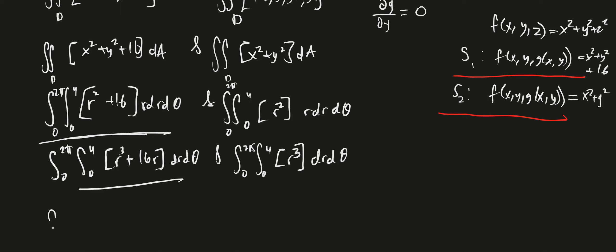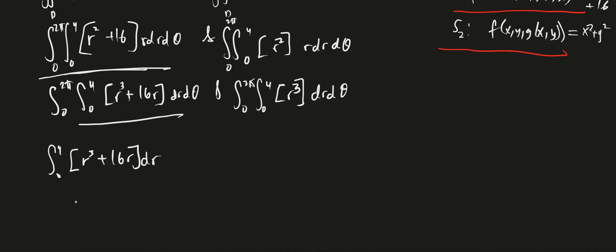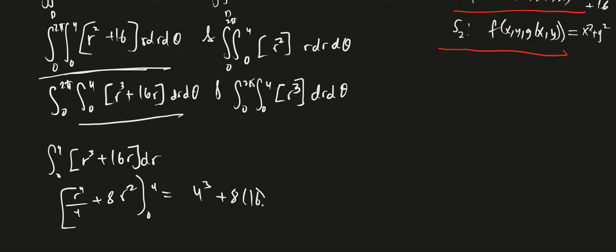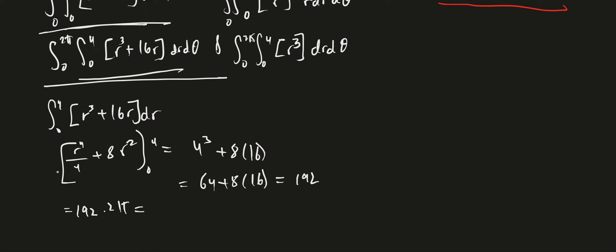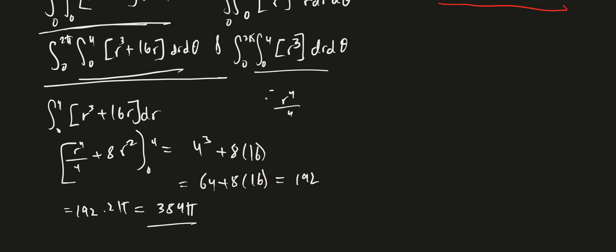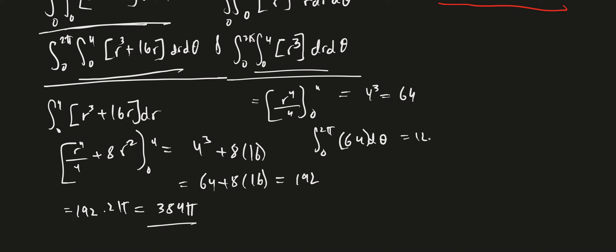For S1: the inner integral from 0 to 4 of (r³+16r) dr = r⁴/4 + 8r² evaluated at 4 = 64 + 128 = 192. Integrating over θ from 0 to 2π gives 192 times 2π = 384π. For S2: the inner integral from 0 to 4 of r³ dr = r⁴/4 evaluated at 4 = 64. Integrating over θ from 0 to 2π gives 64 times 2π = 128π.